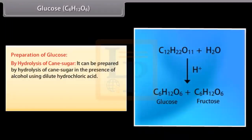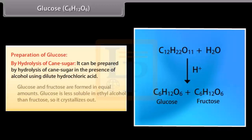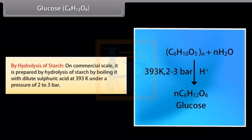The methods of preparation of glucose are as follows. By hydrolysis of cane sugar: it can be prepared by hydrolysis of cane sugar in the presence of alcohol using dilute hydrochloric acid; glucose and fructose are formed in equal amounts. Glucose is less soluble in ethyl alcohol than fructose, so it crystallizes out. By hydrolysis of starch: on a commercial scale, it is prepared by hydrolysis of starch by boiling with dilute sulfuric acid at 393 Kelvin under a pressure of 2 to 3 bar.